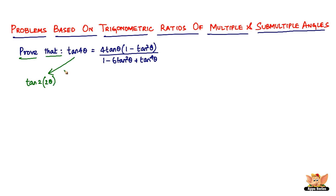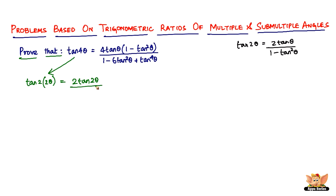So tan(2θ), if you remember, is 2 tan θ divided by (1 minus tan² θ). In this case it will be 2 tan(2θ) divided by (1 minus tan²(2θ)) — in the place of θ it will be 2θ, that's the difference.